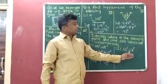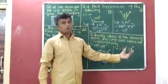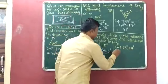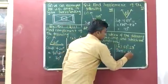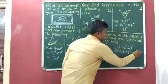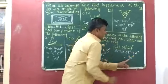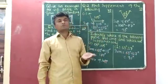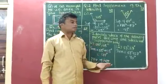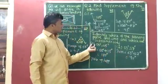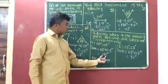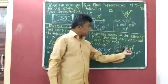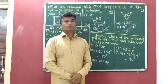Here we have to check whether the given pair is supplementary or complementary. We will find the sum of measures of 63 degrees and 27 degrees. Sum is equal to 63 degrees plus 27 degrees, which equals 90 degrees. Here the sum of measures of both angles is 90 degrees, and we know that if the sum is 90 degrees, the given pair is complementary. So the first pair is supplementary because their sum is 180 degrees, and the second pair is complementary because their sum is 90 degrees. I hope you understand this. Thank you.